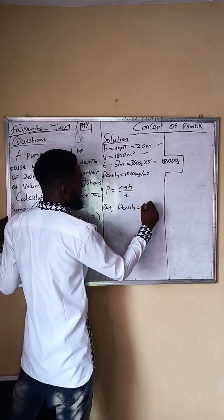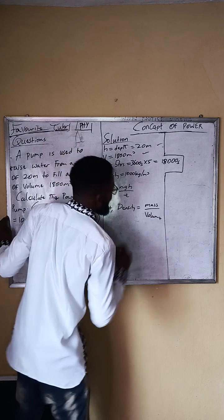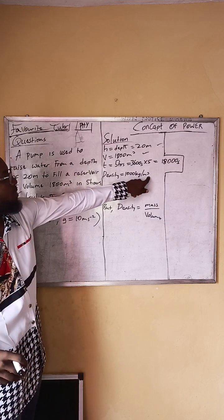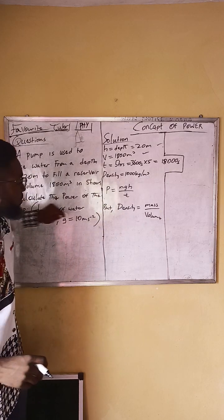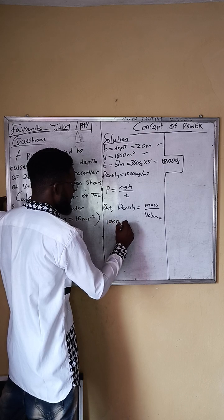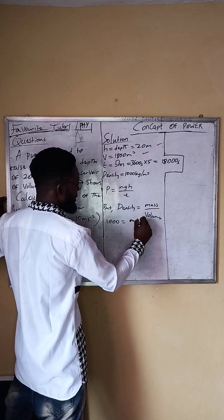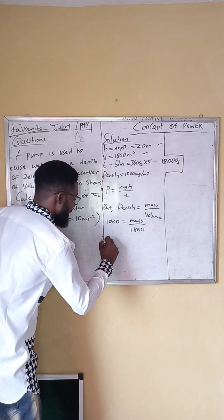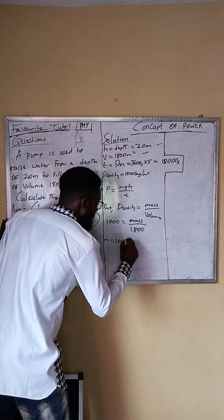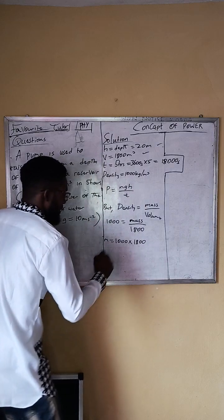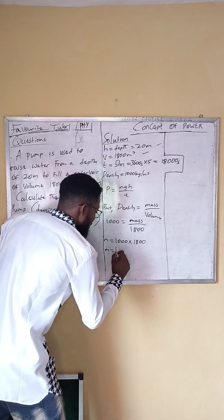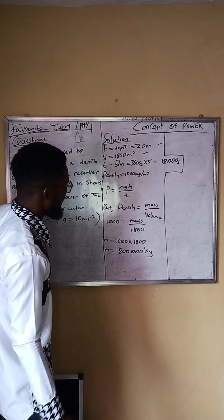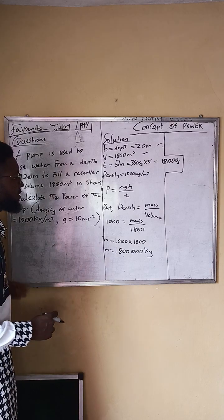We know that density equals mass over volume. We have density equals 1000 kilograms per meter cube, which is mass over volume. The volume is 1800 meter cube. So therefore the mass equals 1000 times 1800, which gives us 1,800,000 kilograms. This is the mass of the water.